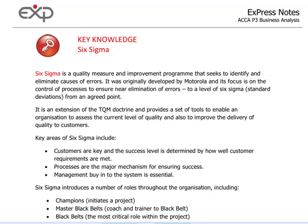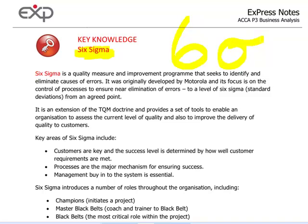We are on the quality chapter at the moment and what we are going to do today is look at something called Six Sigma. Six Sigma is a very well-known quality management tool, originally developed by Motorola in America in the early 1980s, and still today, nearly 30 years later, it is very popular in many sectors of the economy. The broad aim of Six Sigma is to improve the quality of process outputs by identifying and removing various errors — the causes of defects — and minimising variability in manufacturing and business processes.